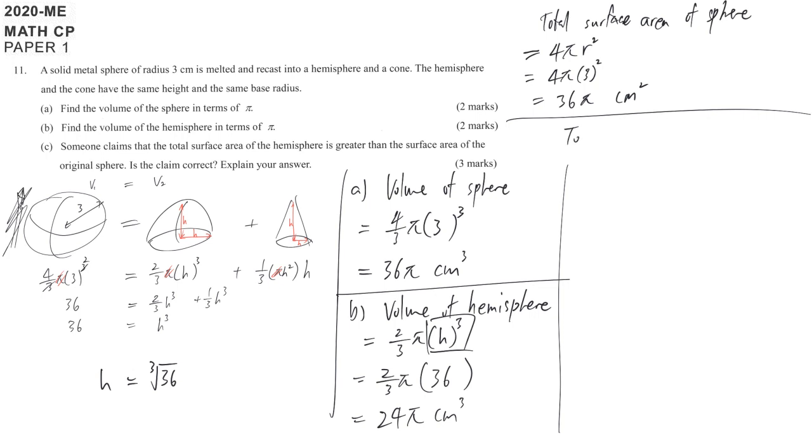Compare with the total surface area of the hemisphere. It comes from the curved surface together with the base. Two things. So the curved surface is 2 pi r squared, and then plus the base is a complete circle, pi r squared. Now the radius is h, so we are going to replace h inside.